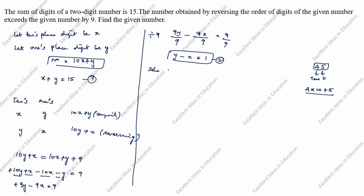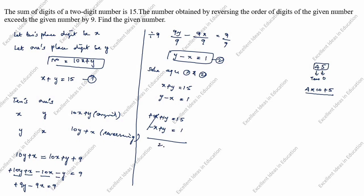Now solve equations 1 and 2. Equation 1: x plus y equals 15. Equation 2: y minus x equals 1. Adding both equations, the x terms cancel: 2y equals 16, so y equals 8.